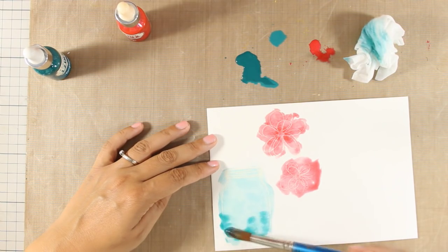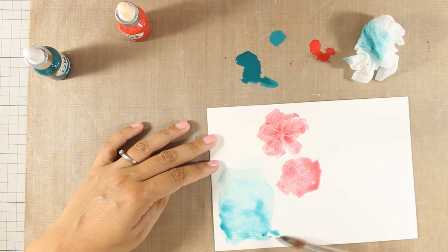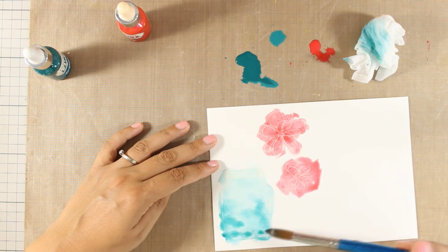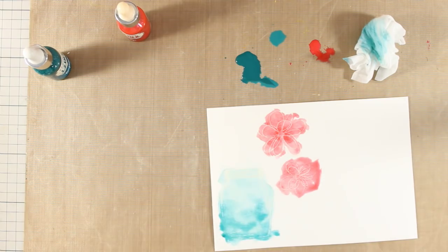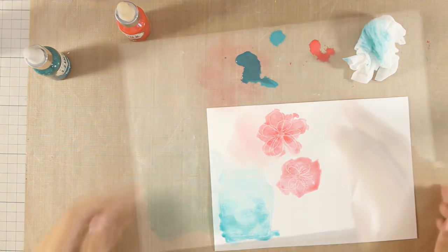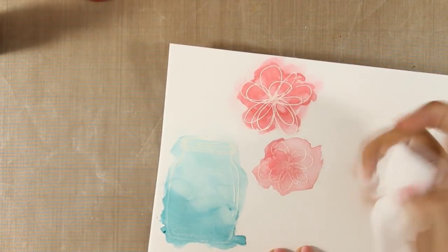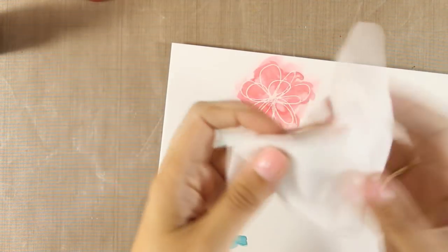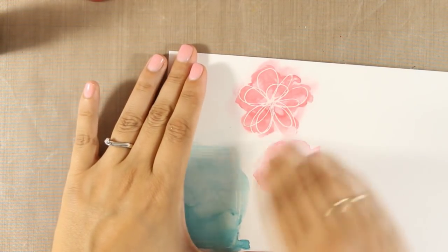Just because my images are embossed I am not going to use my heat gun to speed up the drying process. Because I don't want to re-melt the embossing powder so I am just going to leave this to dry. And then you can use a baby wipe to wipe off the excess ink and it will reveal the embossed lines.